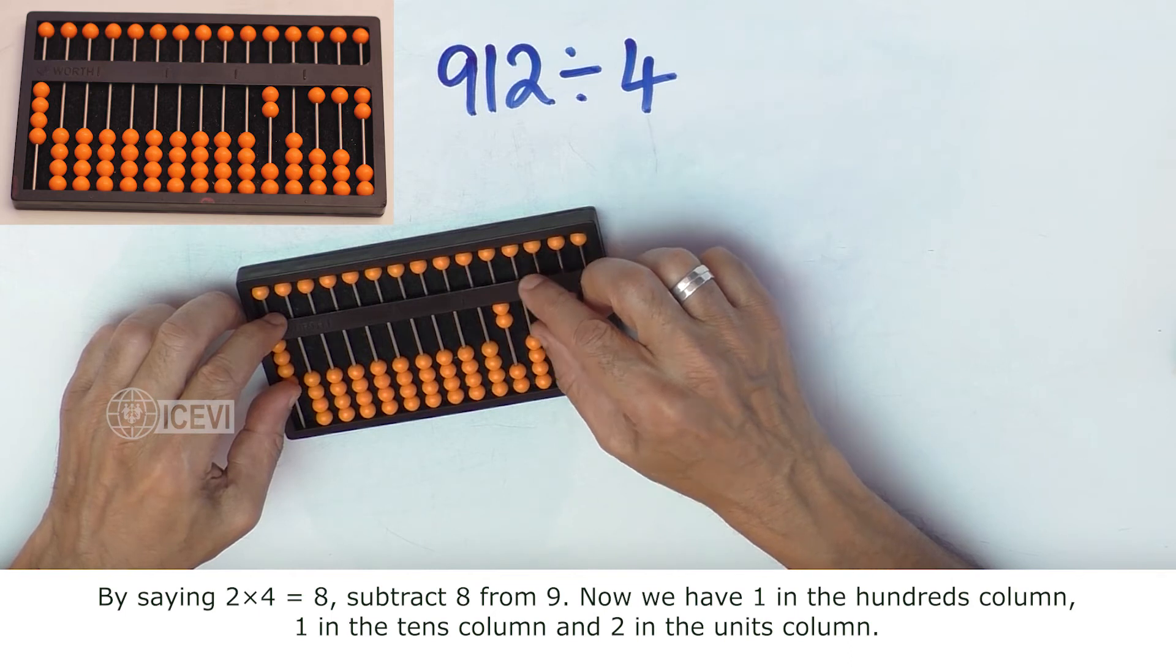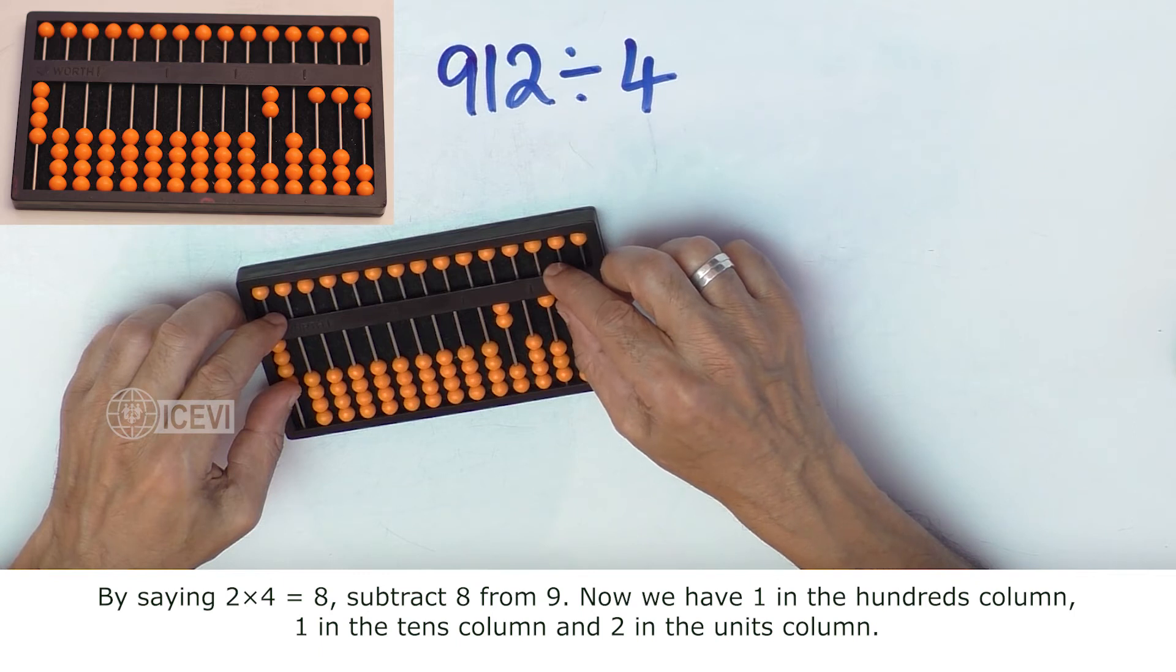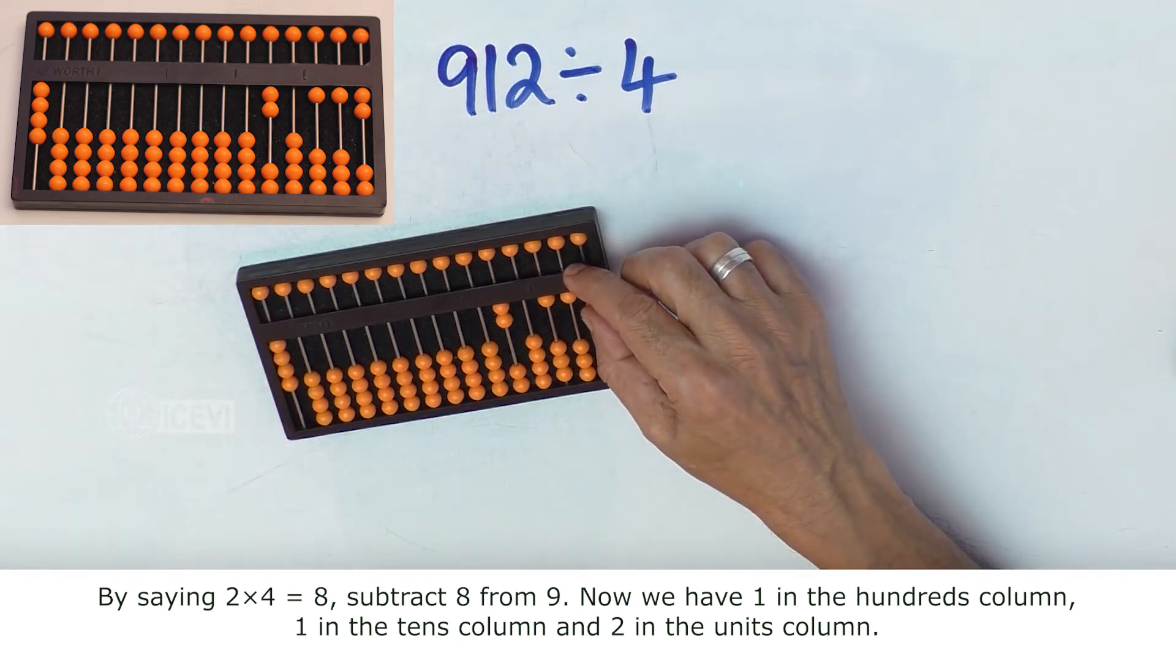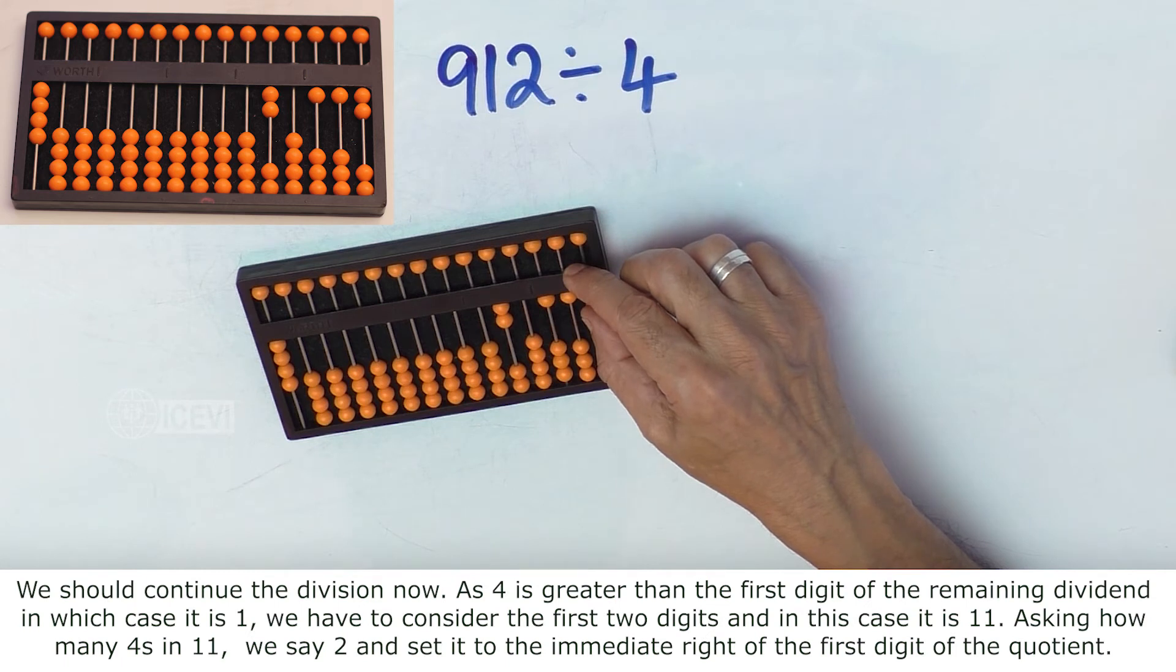Now we have 1 in the hundreds column, 1 in the tens column, and 2 in the units column. We should continue the division now.